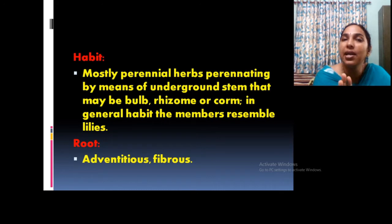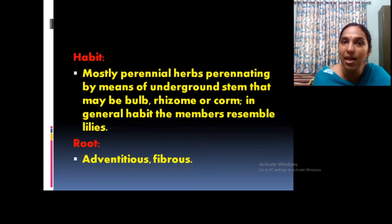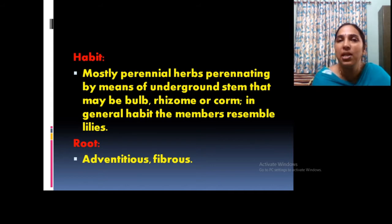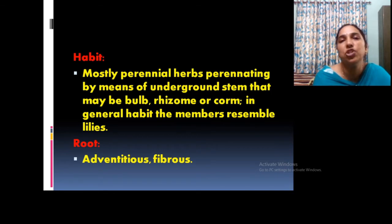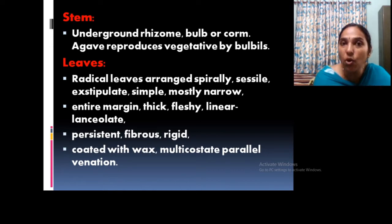In terms of habit, they are perennial herbs. Most of them are herbs with underground stems — bulbs, rhizomes, or corms. These plants are generally observed in the rainy seasons and occur as perennial herbs. The plants of this family resemble common lily families but show some differences. The roots are adventitious roots, arising from the bulbs or rhizomes.